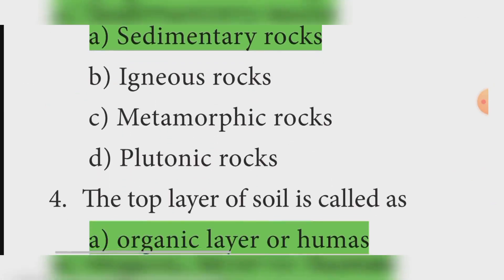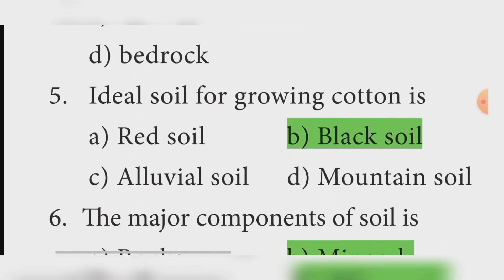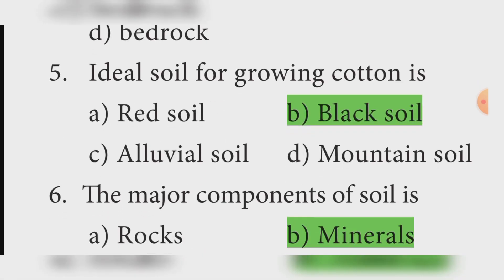Fourth question: The top layer of soil is called as? Answer: Organic layer of humus. Fifth question: Ideal soil for growing cotton is? Answer: Black soil.